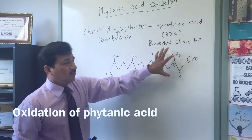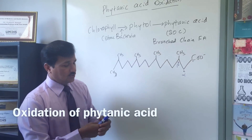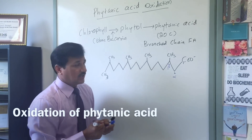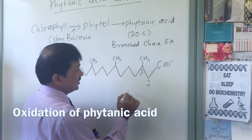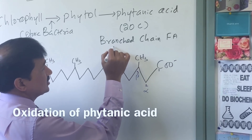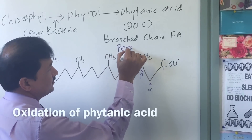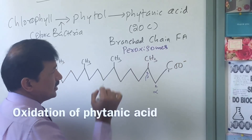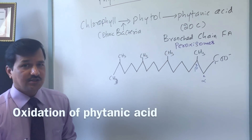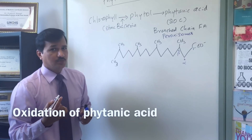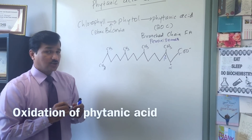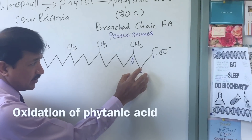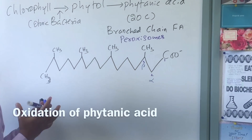So phytanic acid, which is a 20-carbon fatty acid, will be taken into the peroxisome. Initially in the peroxisome this fatty acid is oxidized — this is called peroxisomal oxidation. In the peroxisomes there will be initial alpha oxidation going on in order to remove one of the carbons. We need to do the alpha oxidation: here is the alpha carbon, and this carbon has to be oxidized first — that is the processing going on in the peroxisome.